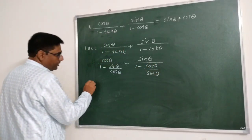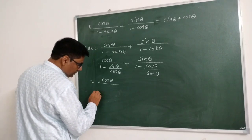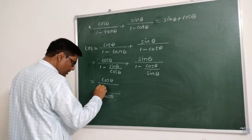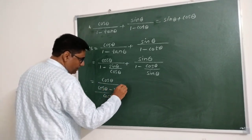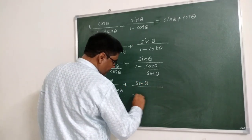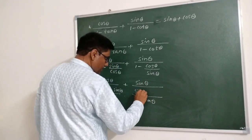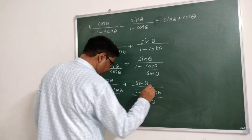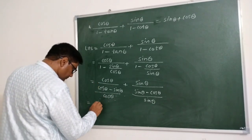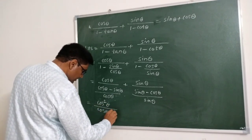Now let us simplify again. For the first term, let us take cos θ as LCM in the denominator, we get cos θ upon (cos θ minus sin θ). For the second term, LCM is sin θ and we get sin θ upon (sin θ minus cos θ). Now cos θ comes to the numerator giving cos² θ upon (cos θ minus sin θ).